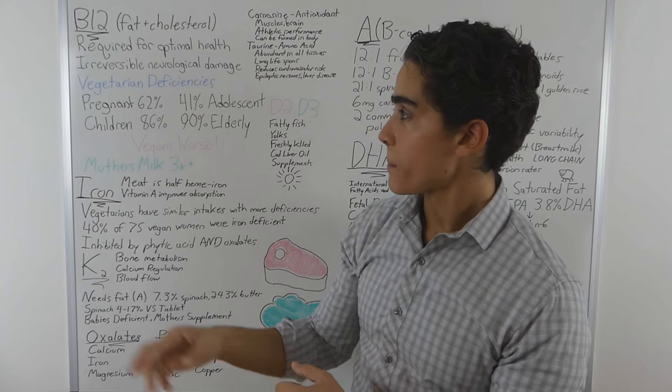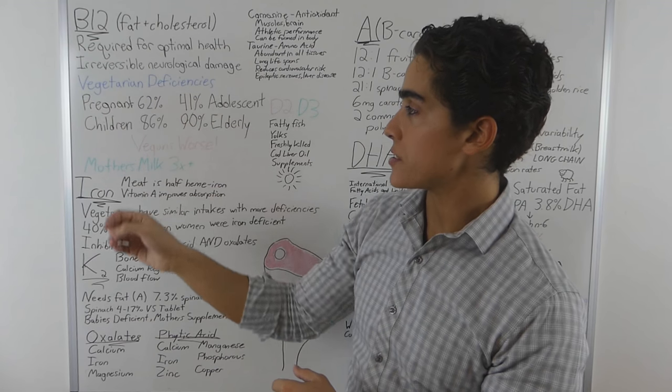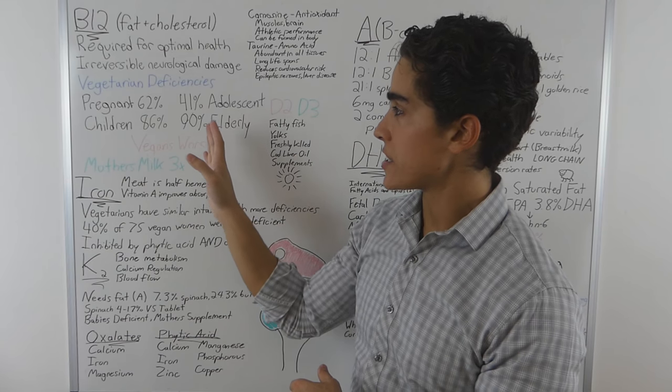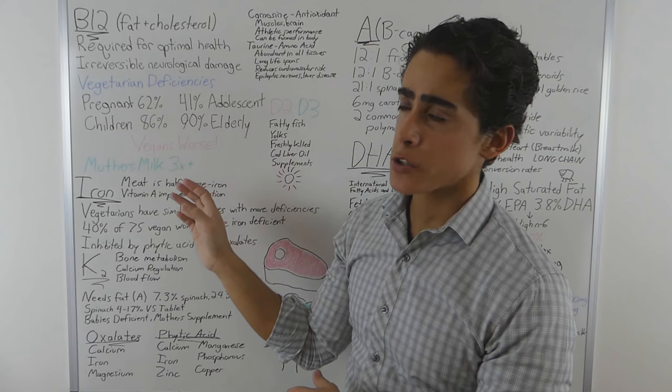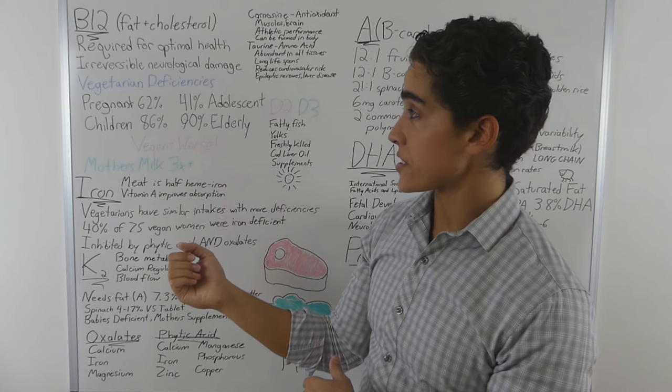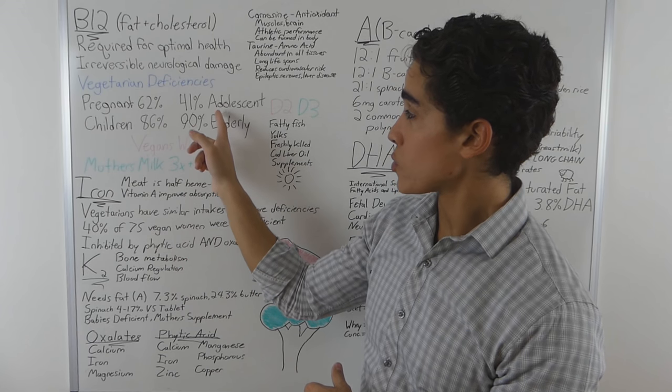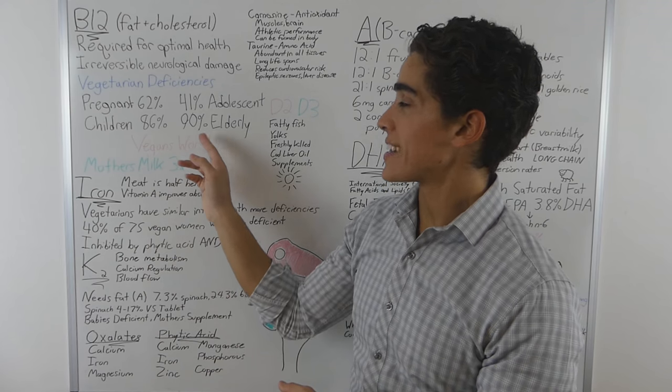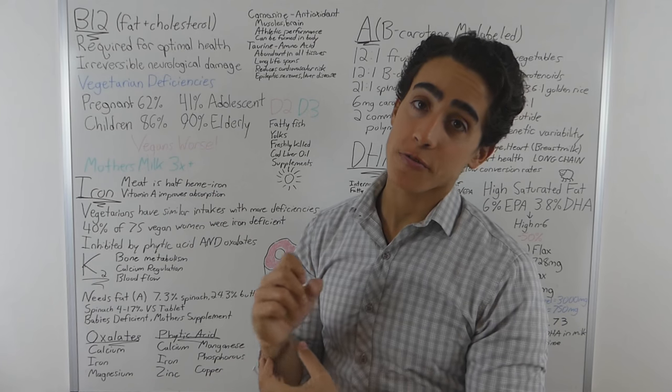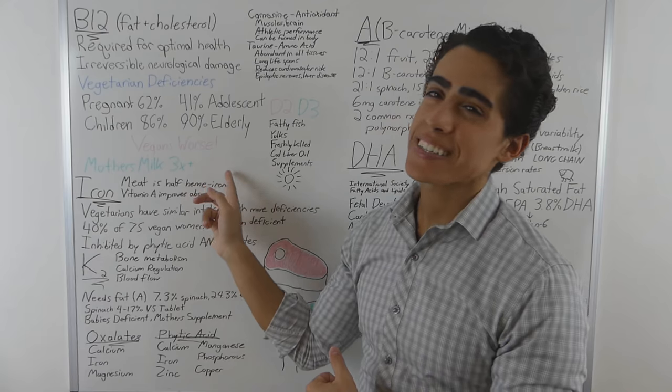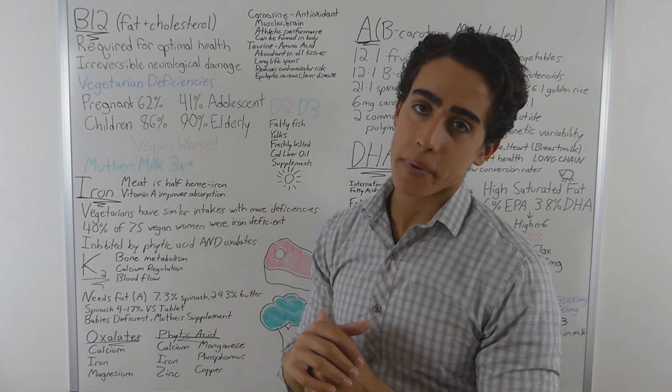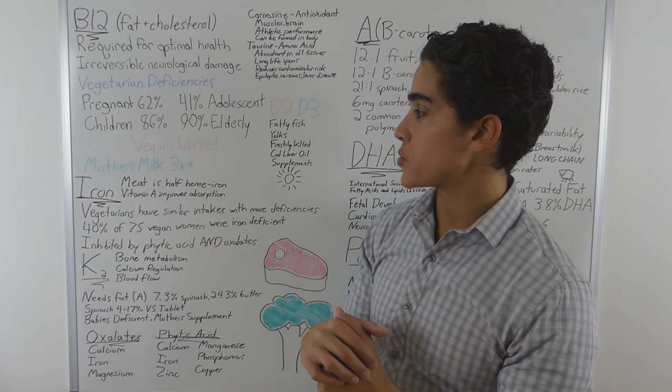In regards to vegetarian deficiencies, and this isn't a concrete percentage, it might have been like 40 to 62% of pregnant women were deficient in vitamin B12, up to 41% of adolescents, up to 86% of children, and up to 90% of elderly people were deficient in vitamin B12. Imagine how much worse vegans are. And a lot of people in the general population are even deficient in vitamin B12.